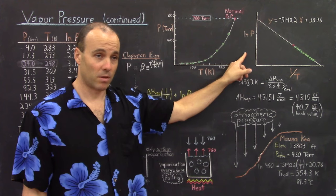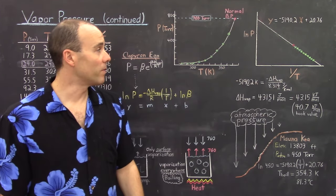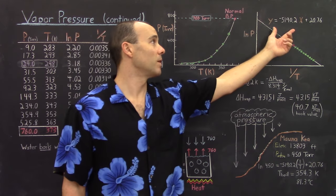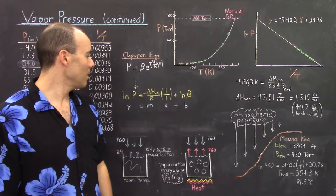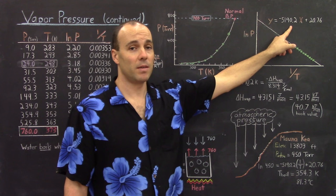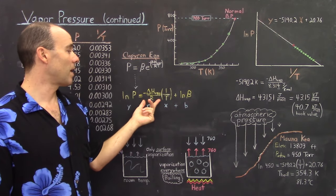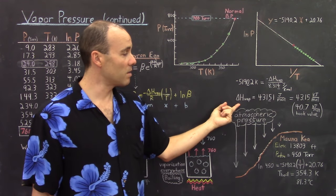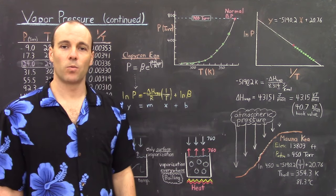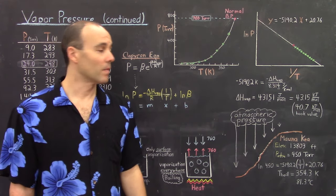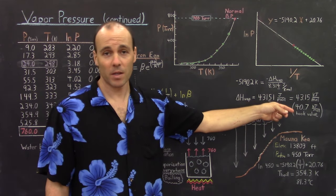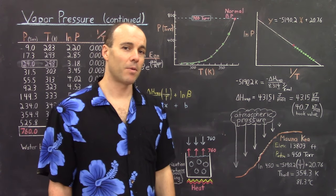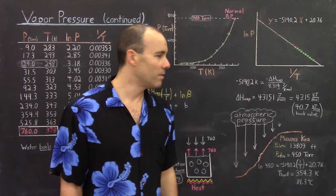Plotting the natural log of the pressure versus the inverse temperature, we do get that straight line. With the help of a computer, we can calculate the linear least-squares regression line through that data, and it will give us the slope and the y-intercept. The slope of −5190.2 should be equal to −ΔH_vap / R. Setting those equal to each other, we can solve for the ΔH of vaporization, and that ends up being 43,151 joules per mole, or 43.15 kilojoules per mole — and that's close to the reported book value of 40.7 kilojoules per mole. So the Clapeyron equation gave us a pretty accurate value of the heat of vaporization of water.